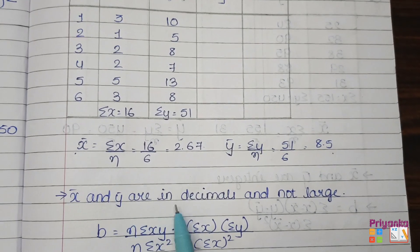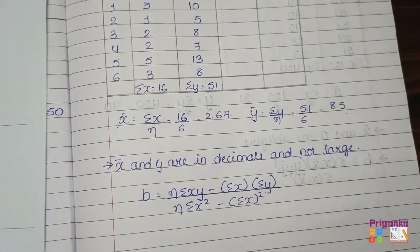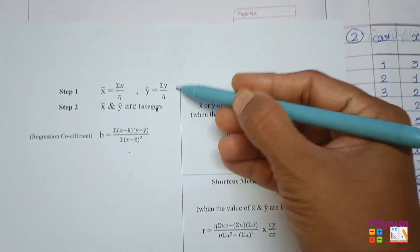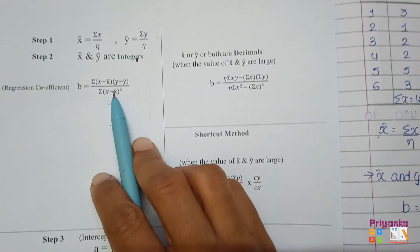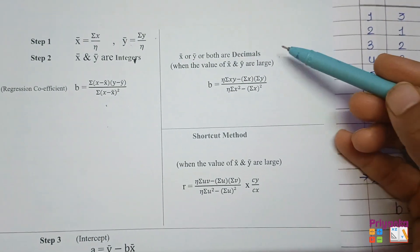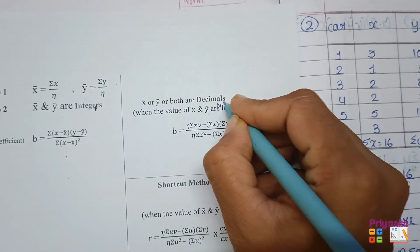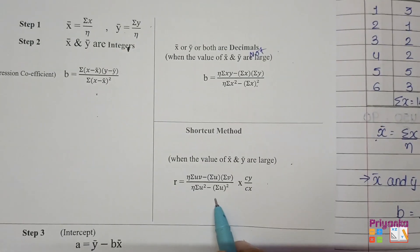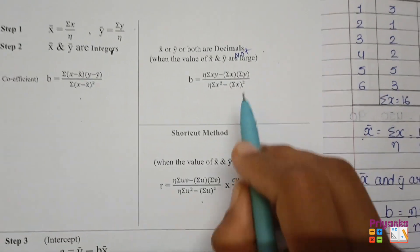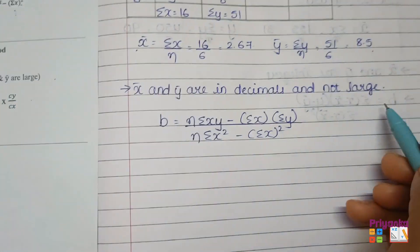Since x̄ and ȳ are in decimal but not large values, we have two options for the second step. If the value is not large, we can use the direct formula; if it is large, we have to use the UV formula. Since the values are not so large, we are going to use the direct formula this time.